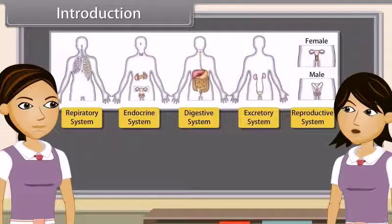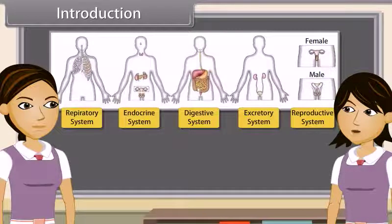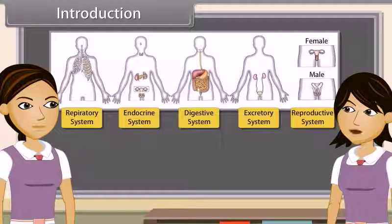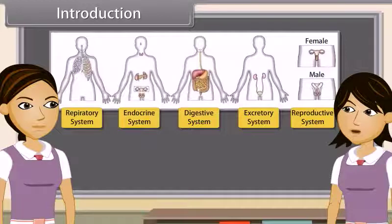Each system is specialized to do a specific function, such as nutrition, digestion, respiration, transport of materials, and excretion respectively. In each system, all the organs work together so that the whole system can work properly. In other words, all the organs of a system coordinate with each other so that the system can work properly.